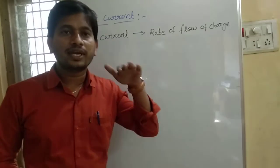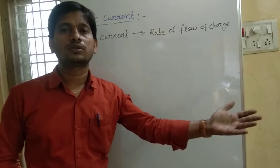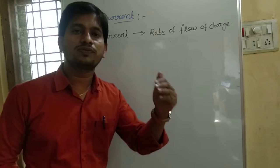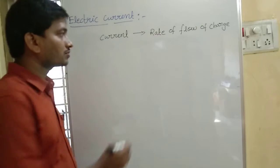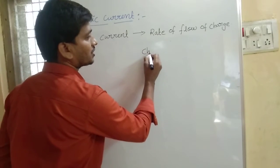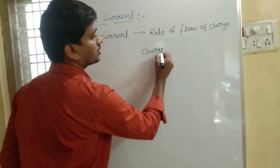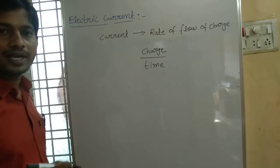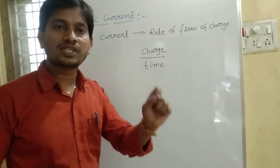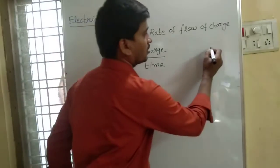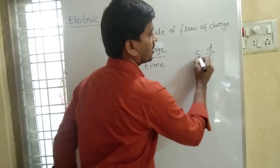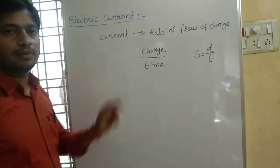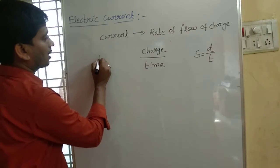I mean the speed at which charge flows per unit time. Like, distance upon time gives us speed. Similarly, charge upon time gives electric current.